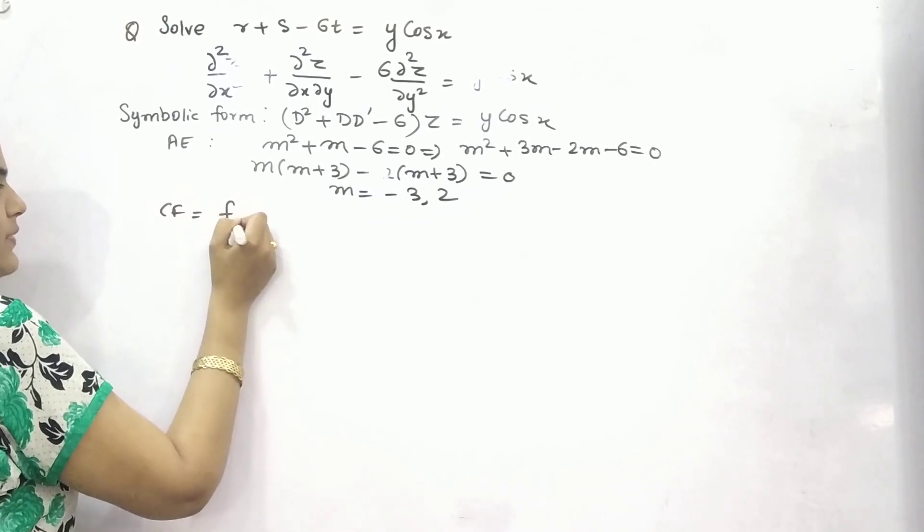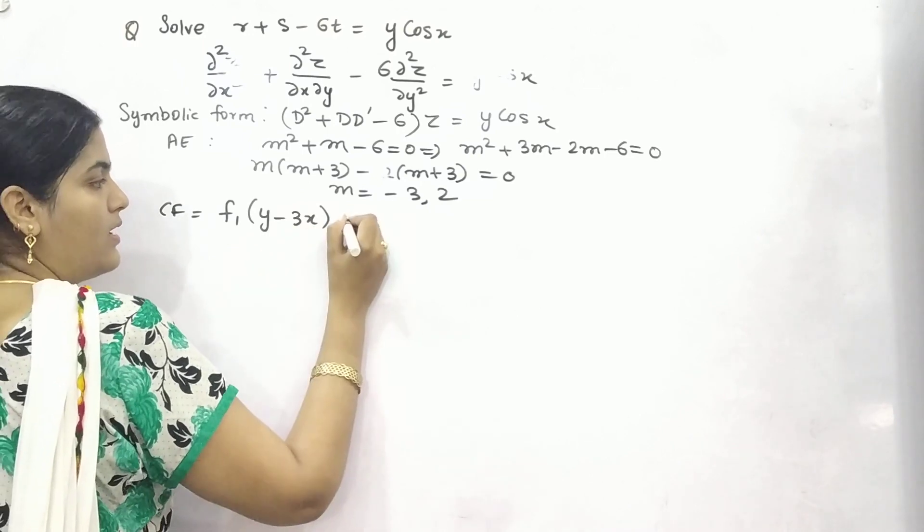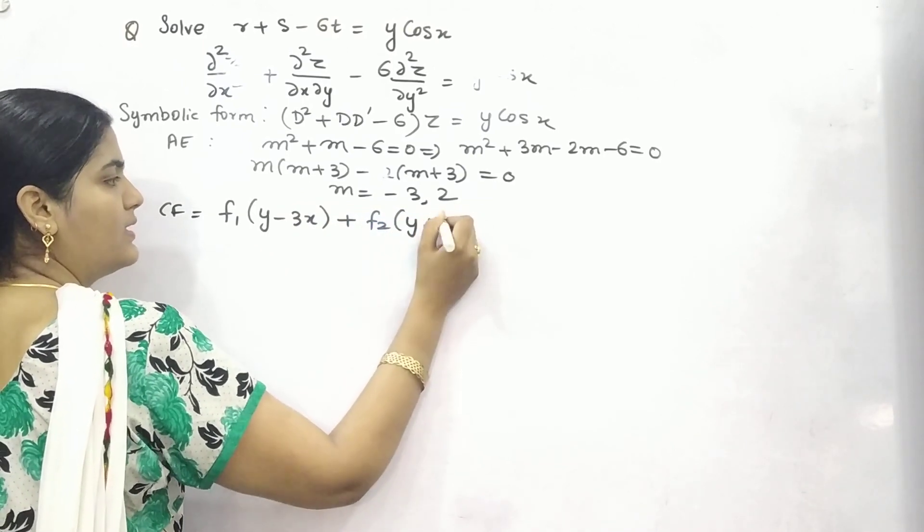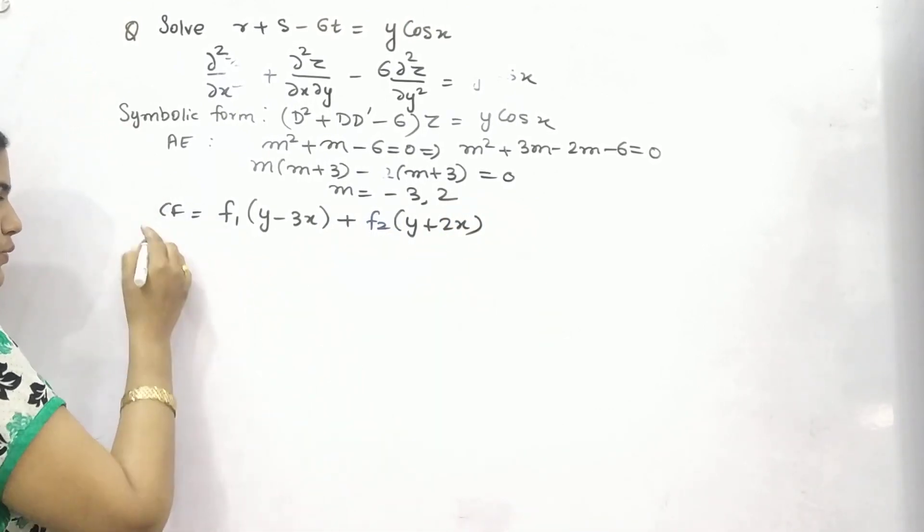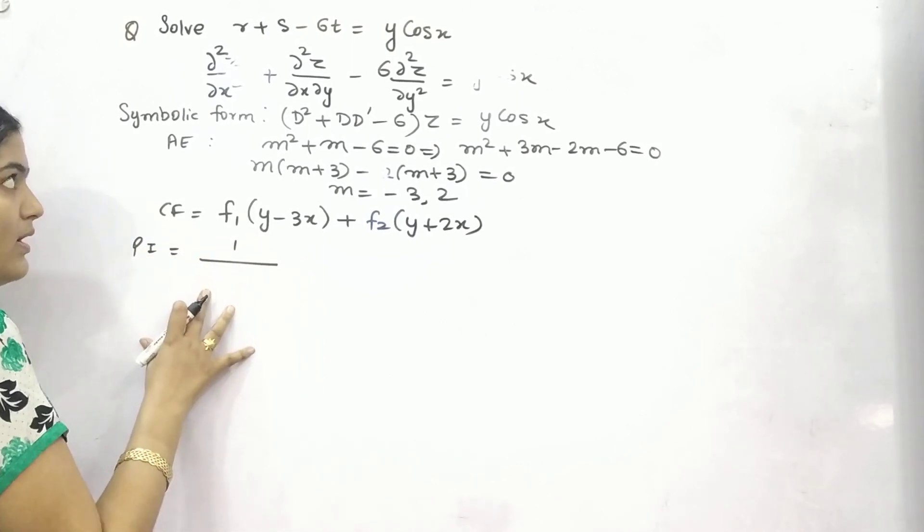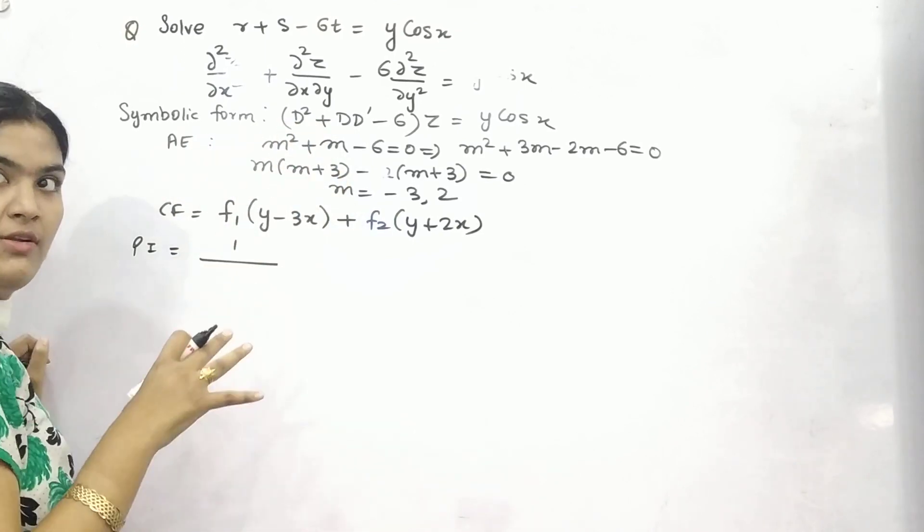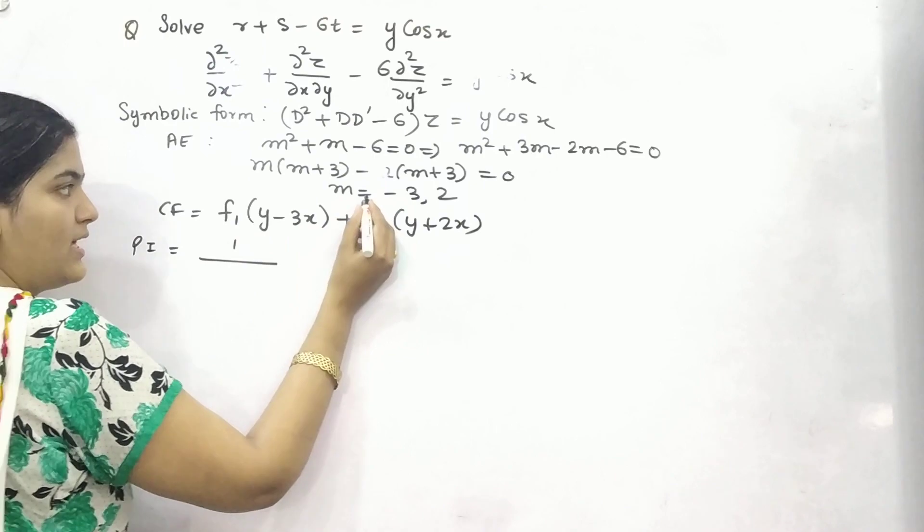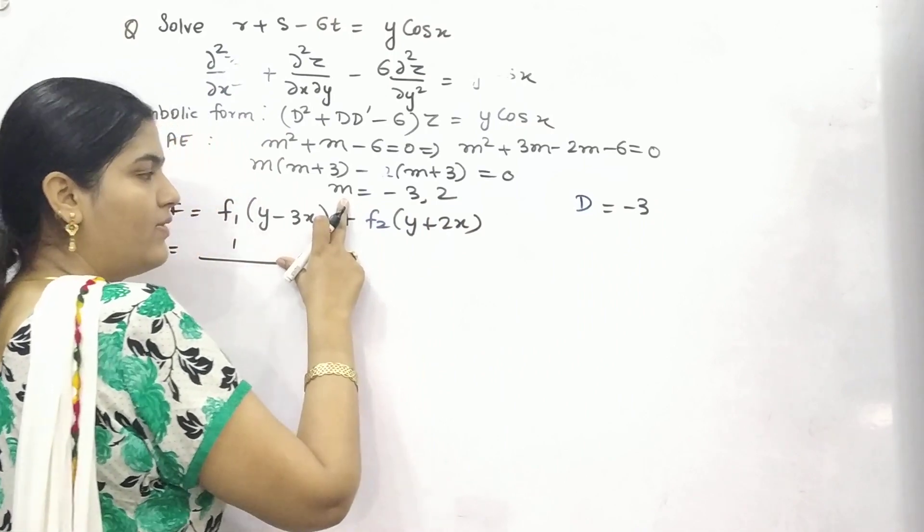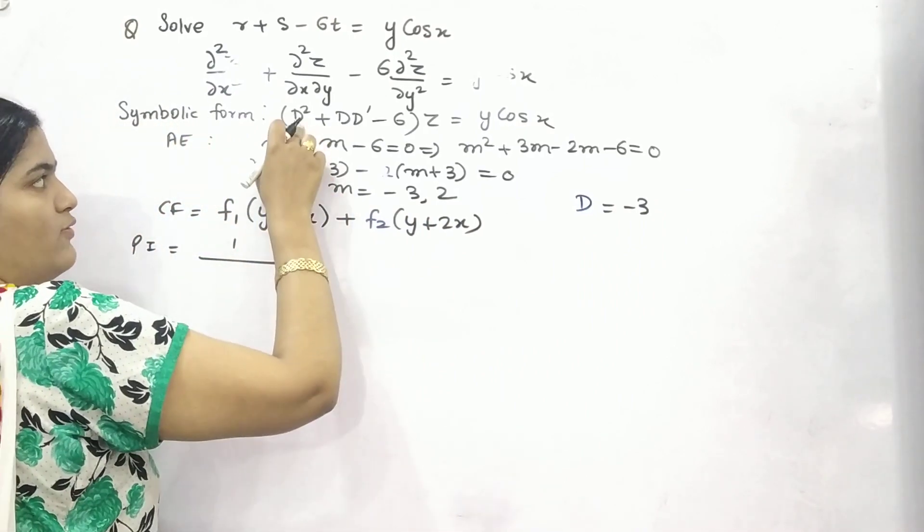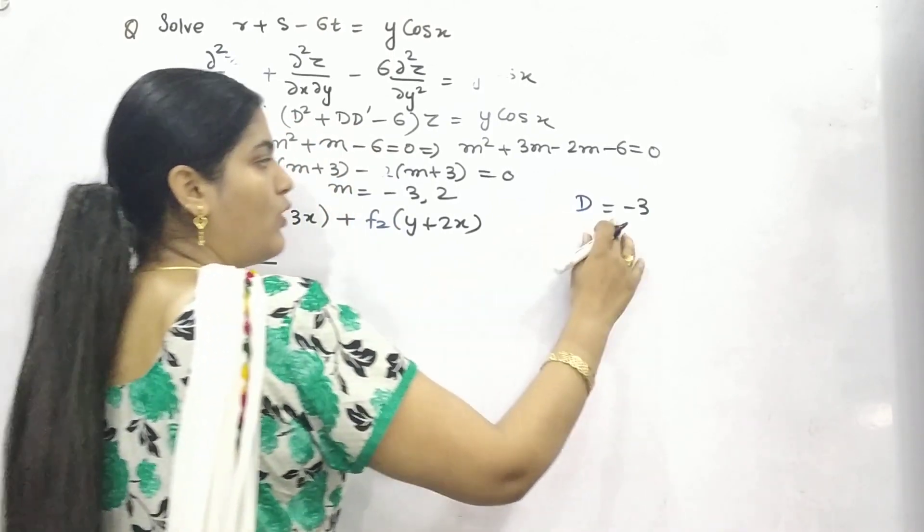So complementary factor is f₁(y+3x) + f₂(y+2x). These are your m's that you have quoted here. Now for particular integral, remember you will not put your symbolic form here in general formula. What you need to do? You have to take, if you see d is equal to -3, this is the value. This was the value for d, partial differentiation. We have put d as m.